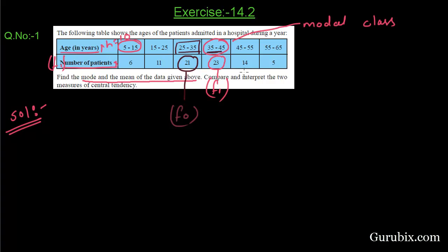Now, we have to find F2. F2 is the frequency of that class interval which comes after the modal class interval. We can see in this table, 45 to 55 comes after the interval 35 to 45, which is our modal class. So, 14 is the F2.